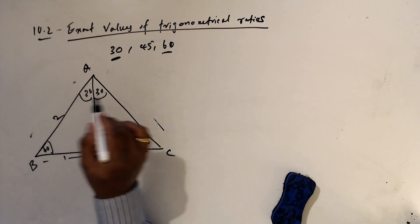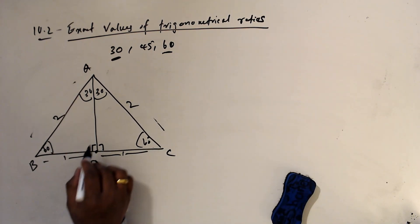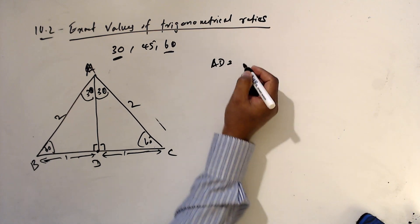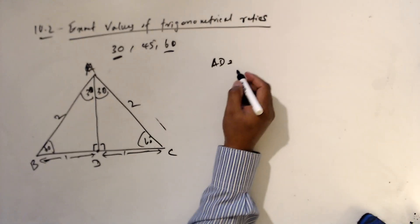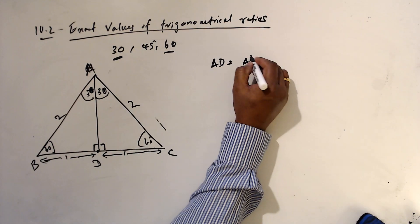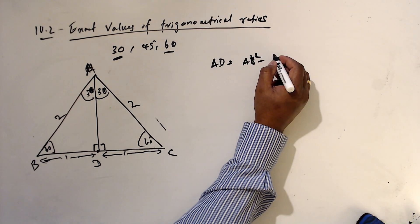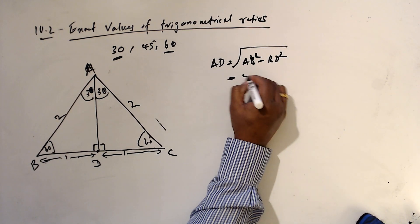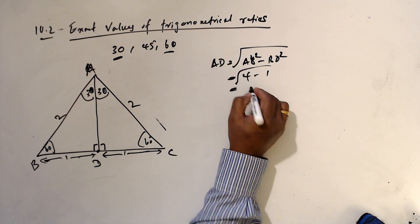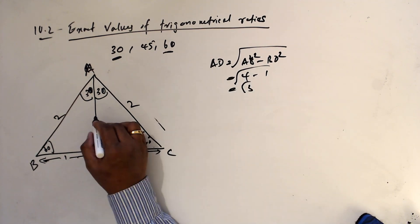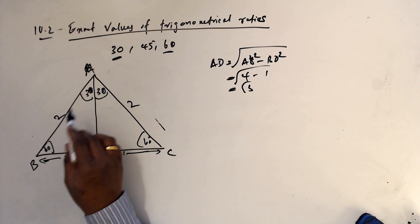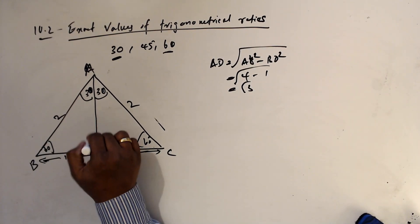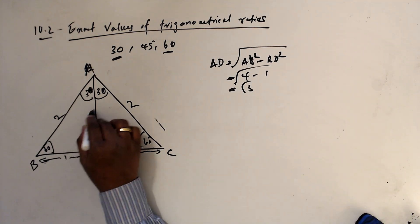The side lengths are 2, 2, and 2. We find AD using the Pythagorean theorem: AD = √(AB² − BD²) = √(4 − 1) = √3. So knowing the hypotenuse and one side, you can find the other side, which gives us √3.